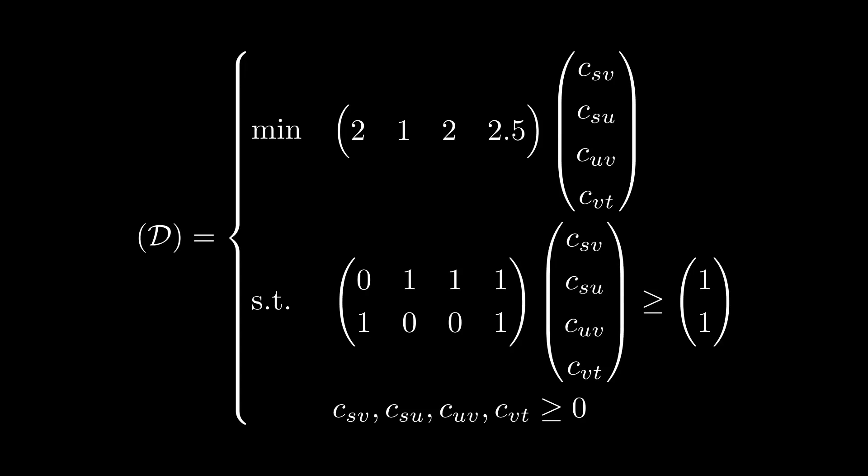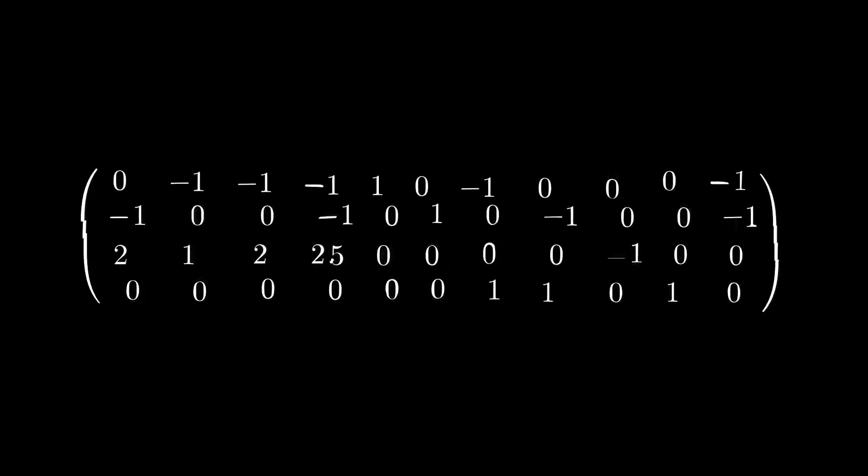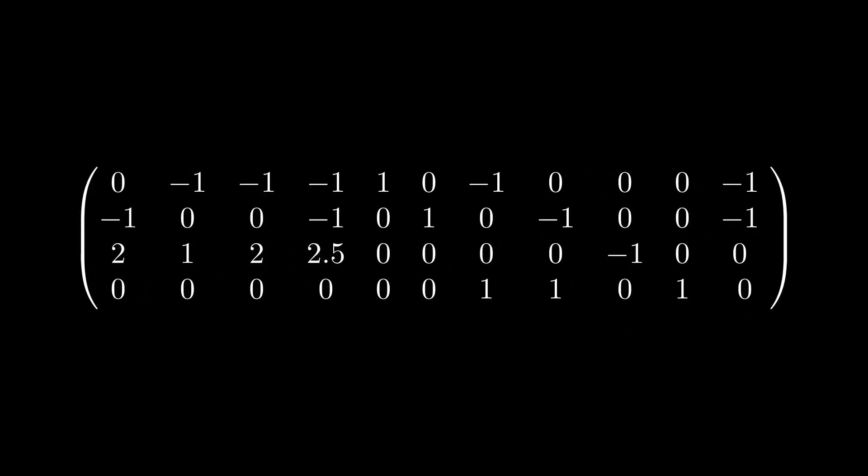Consider the dual of the max flow problem described earlier, in other words, the equivalent min-cut problem. We can restate this as a maximization problem as follows. Note that we also flip all the inequalities and the constraints to upper bounds to get the standard form of a LP. We insert the necessary artificial variables as follows to get the following tableau. Note here that the last row corresponds to a new condition we are optimizing over.